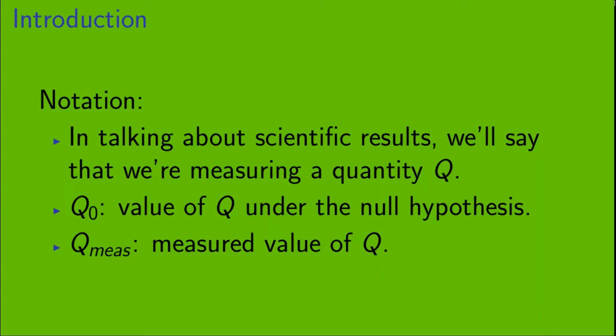Now, I should make a quick note about notation. In talking about scientific results, we're going to say that we're measuring a quantity called q. q0 is the value of q under the null hypothesis, and q measured is the measured value of q. Okay, let's start with 1 sigma.